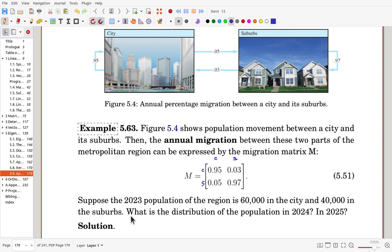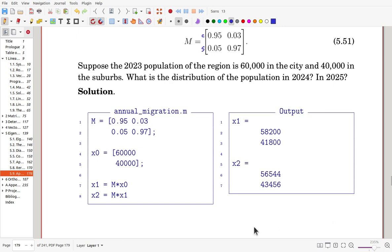Suppose that 2023 population of the region is 60,000 in the city and 40,000 in the suburbs. What is the distribution of the population in 2024 and in 2025? Then we can multiply this migration matrix to the vector 60,000, 40,000. Then we can get the population in 2024. If we multiply one more time, then we can get the population for this year. So, let's do it by using MATLAB or OCTAVE.